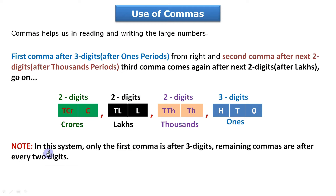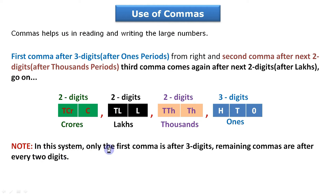Important note: in the Indian system, only the first comma is after three digits; all remaining commas are after every two digits. This is very easy to remember. Now we will see how to read a number using these commas.